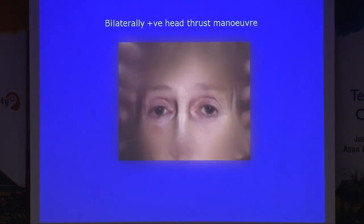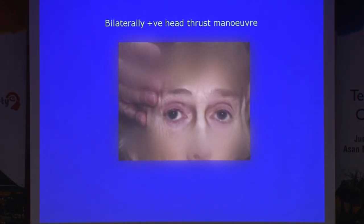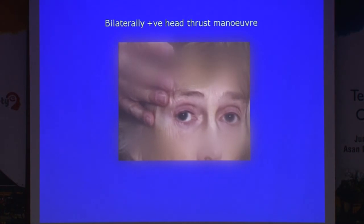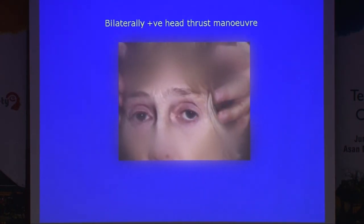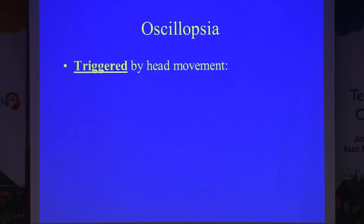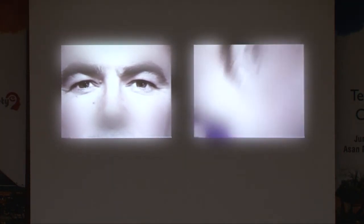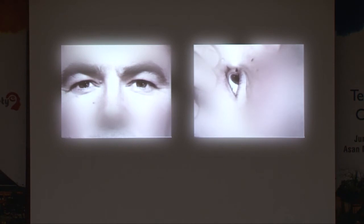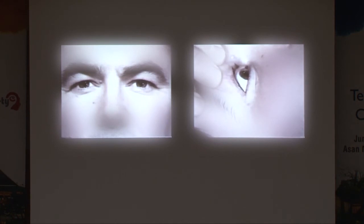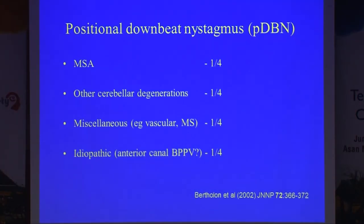This is the head thrust test in a patient with bilateral vestibular failure — catch-up saccades to one side or the other. Causes of absent VOR are many. A patient with positional downbeat nystagmus: no nystagmus in the upright position, but when lying down the patient cannot read the newspaper because it all bounces up and down. The nystagmus can stop, or it can continue — in which case the visual problem is more permanent.